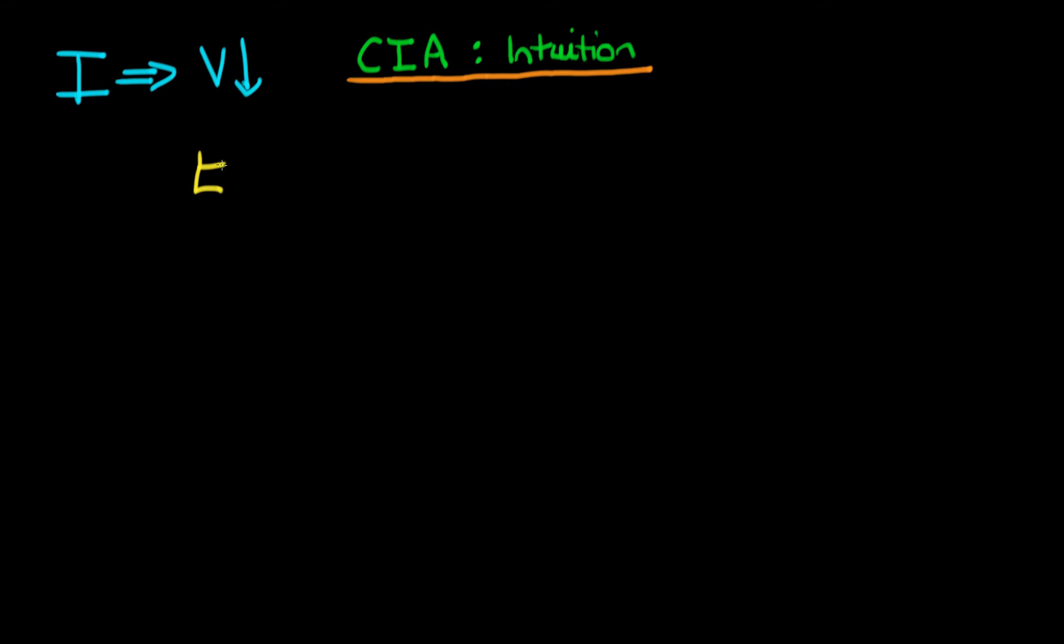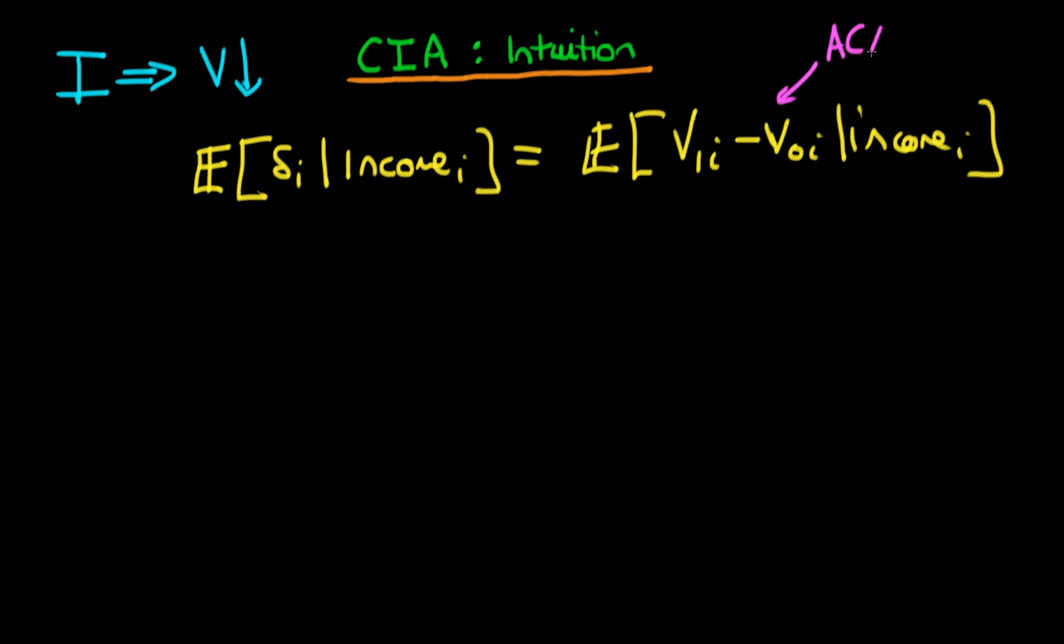So in the last video, we had that the expectation of the average of the causal effect given a district's level of income was actually equal to the expected value or the difference between V1i minus V0i, given a particular district's level of income. And we called this particular term on the right hand side the average causal effect conditional on income.